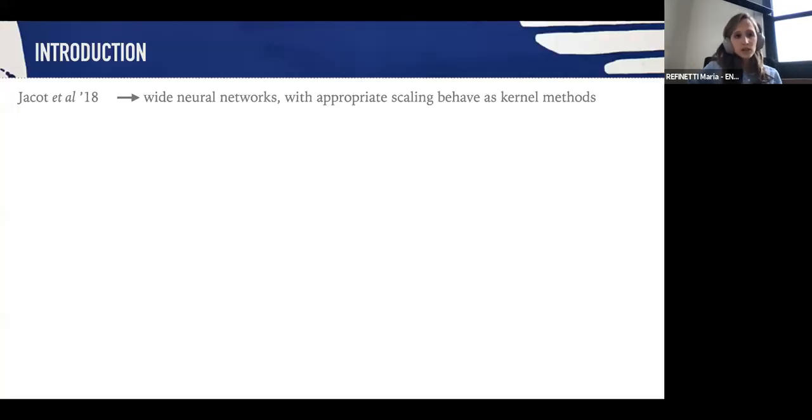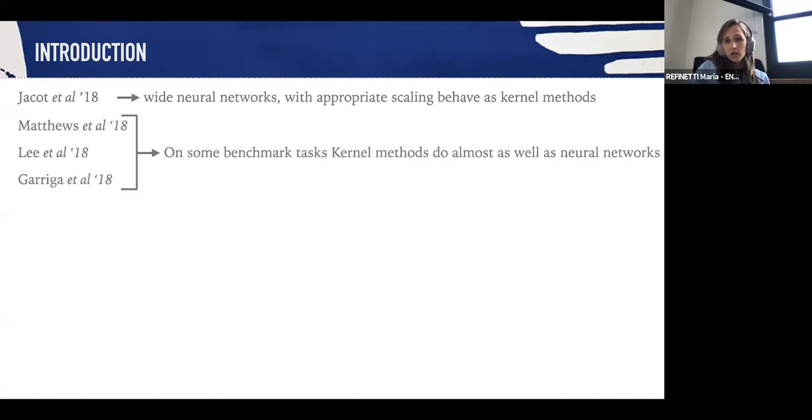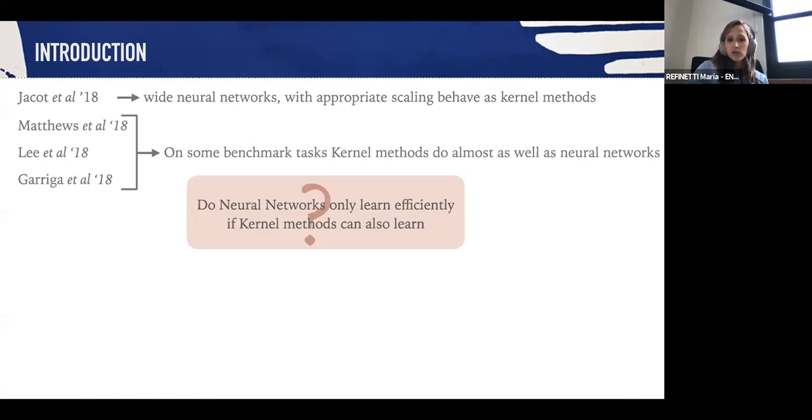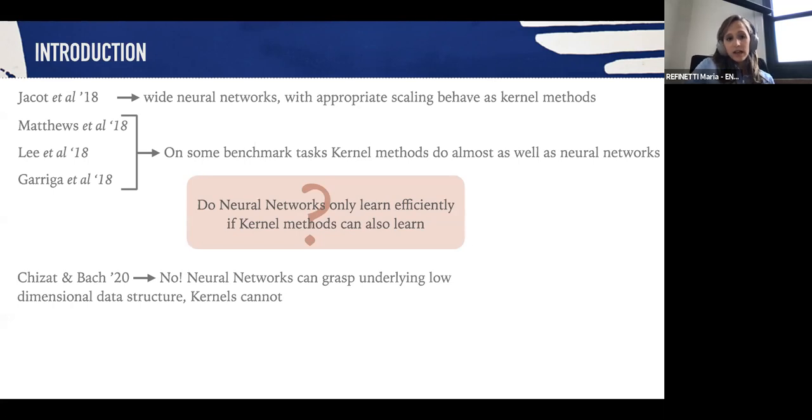To give you a bit of background, in 2018 came out this result that showed that wide neural networks with an appropriate scaling behave just as kernel methods. Concurrent empirical work showed also that on some benchmark tasks, kernel methods do almost as well as neural networks. This raises the fundamental question of whether neural networks can only learn efficiently if kernel methods can also learn.